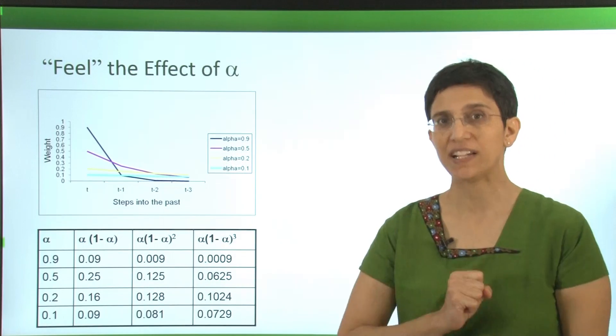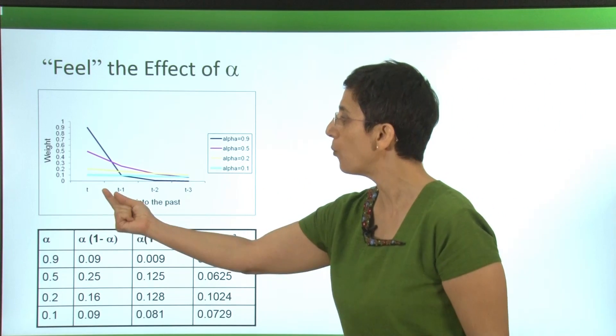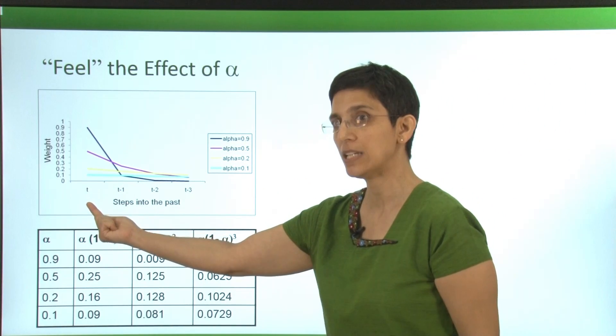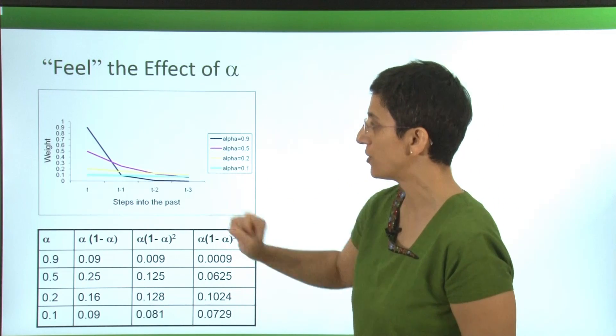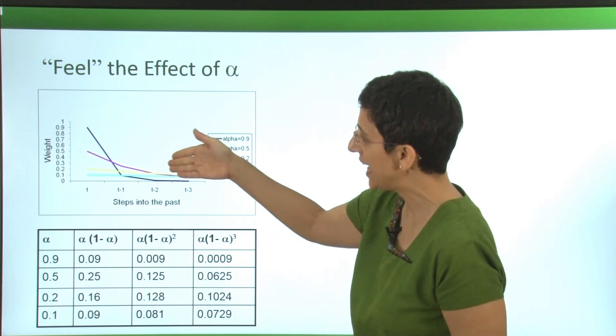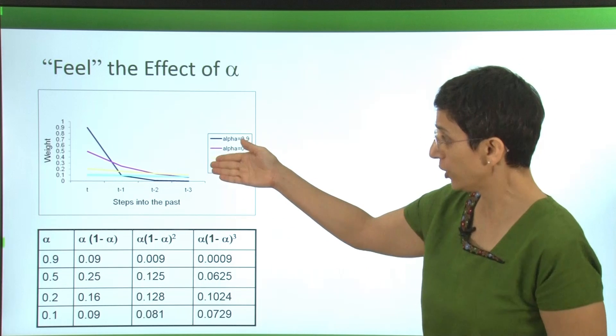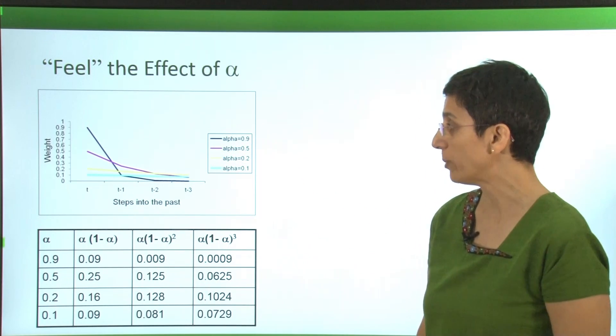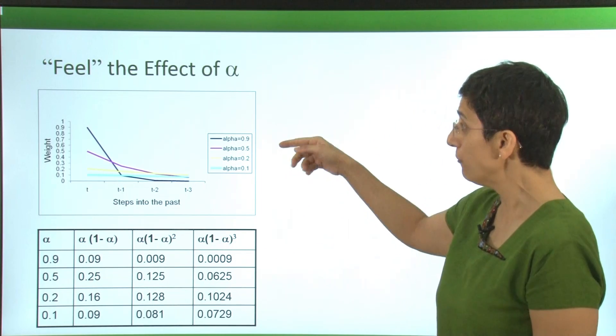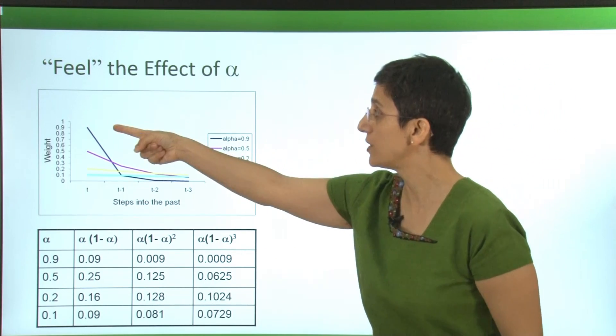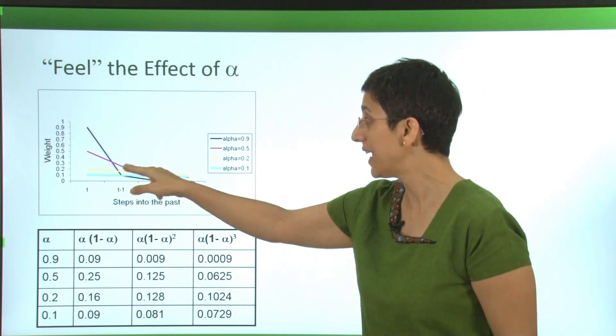To feel the effect of alpha, let's look at a chart that shows how alpha affects the weights on the most recent period and older periods. We can see that in all cases, all these lines are different alphas, but they all decay as we go further into the past. We can look at the actual values in the table below, and you can see again the exponential decay. With alphas that are very large, like alpha 0.9, the decay is fast. Whereas with smaller alphas, the decay is slower.